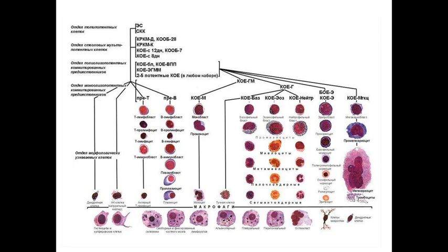All our blood cells are formed from one unique stem cell located in the bone marrow. Under the action of colony stimulating factors, from these stem cells are formed different kinds of blood cells like leukocytes, like platelets, and also red blood cells.